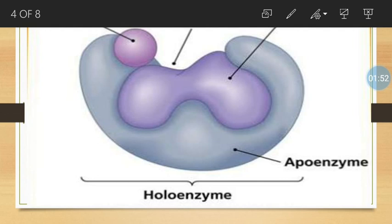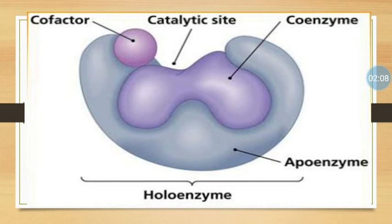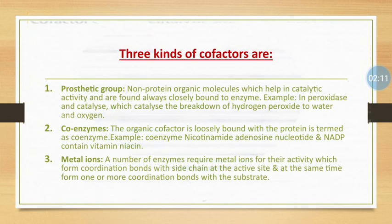Enzymes are composed of one or several polypeptide chains. The non-protein component of an enzyme requires cofactors to function properly. Cofactors are bound to the enzyme to make it catalytically active. There are three kinds of cofactors: prosthetic groups, coenzymes, and metal ions.